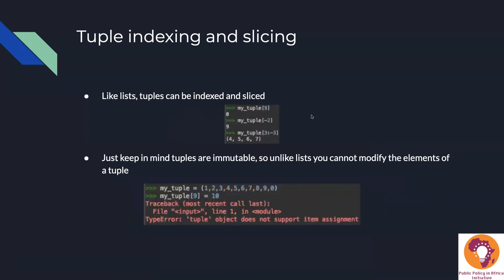Unlike sets, tuples can be indexed and sliced, more like lists. Getting the value at index nine returns zero. Negative indexing works too — index negative two returns nine. You can also slice: getting index three up to negative three gives values four, five, six, and seven, because index three is inclusive and negative three is exclusive. Indexing and slicing are perfectly valid on tuples, but remember — unlike lists, you cannot modify the elements.